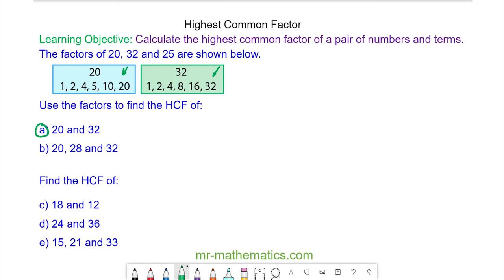So the highest common factor of 20 and 32 we can see that 1 is common to all of them as is 2 and 4. However, because 4 is the highest factor which is common, the answer is 4.